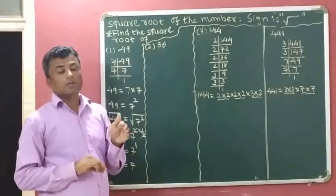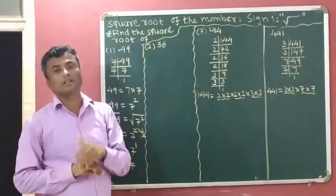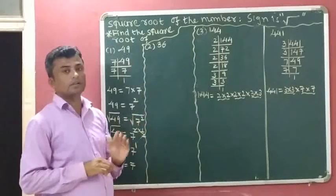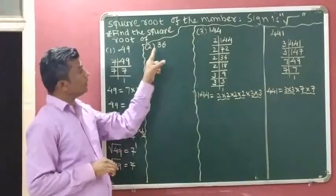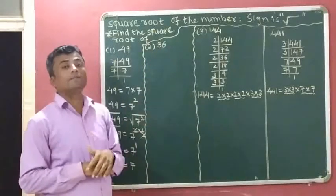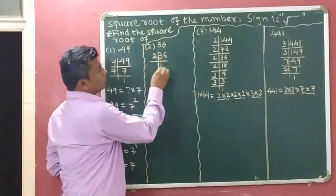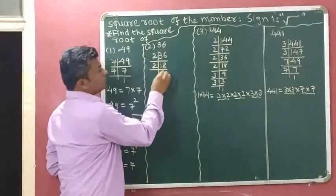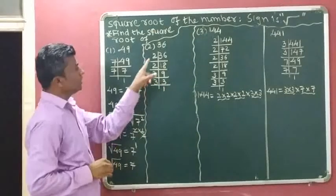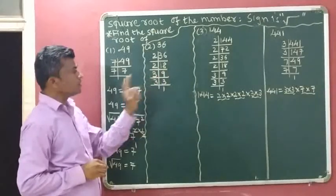First, normal method: which two same digits we can multiply to get 36? 6 times 6 is 36, so the square root of 36 is 6. Now, with the prime factorization method, we identify the prime factors of 36. 2 times 18 is 36, 2 times 9 is 18, 3 times 3 is 9, and 3 times 1 is 3.